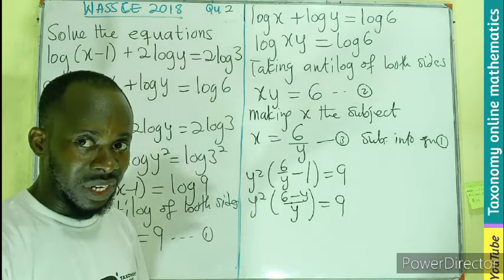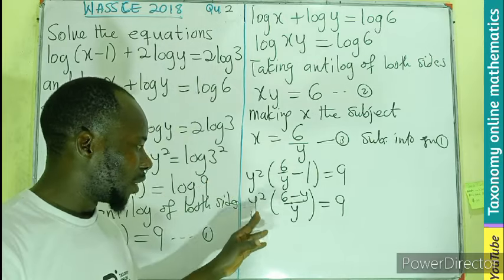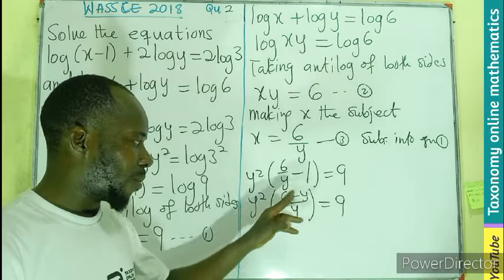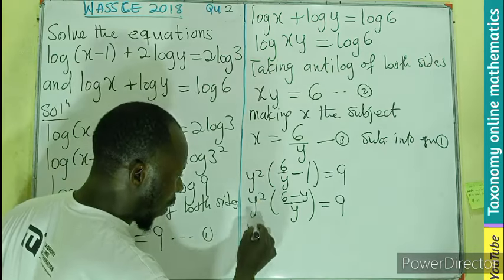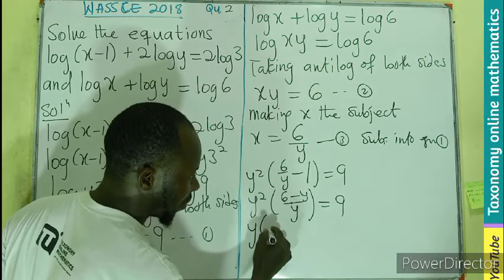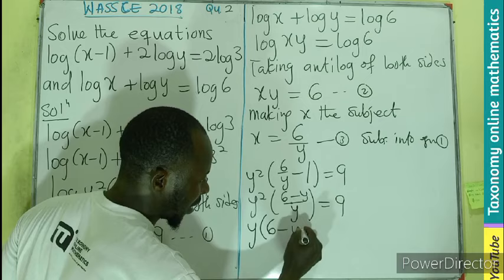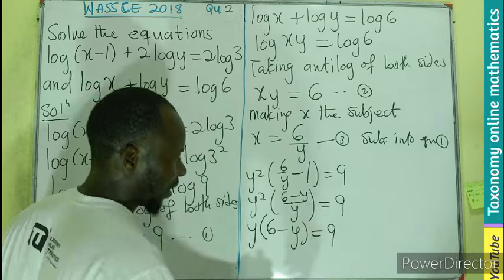Performing the fraction in the brackets. So now we have a single fraction, numerator, denominator. So we can multiply. And if you are multiplying, you know the denominator can go in here and cancel. So we will be left with only y(6-y) = 9.